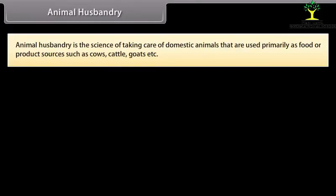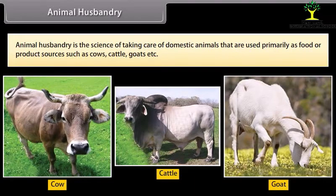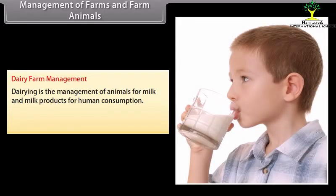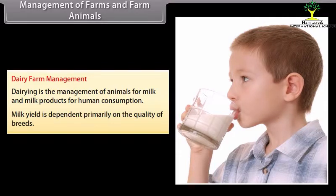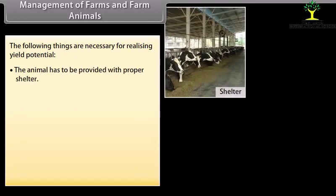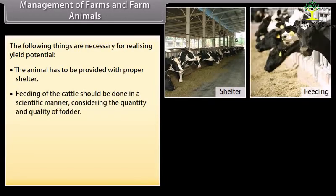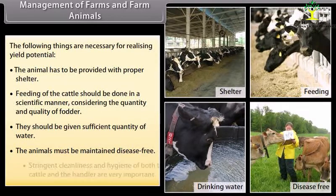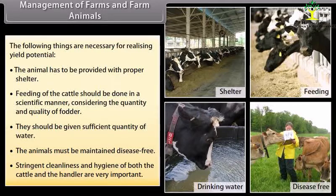Animal husbandry is the science of taking care of domestic animals that are used primarily as food or product sources, such as cows, cattle, goats, etc. Dairy farm management: Dairy is the management of animals for milk and milk products for human consumption. Milk yield is dependent primarily on the quality of breeds. The animal must be provided with proper shelter, feeding done in a scientific manner considering quantity and quality of fodder, sufficient water, disease-free conditions, and stringent cleanliness and hygiene of both the cattle and the handler.